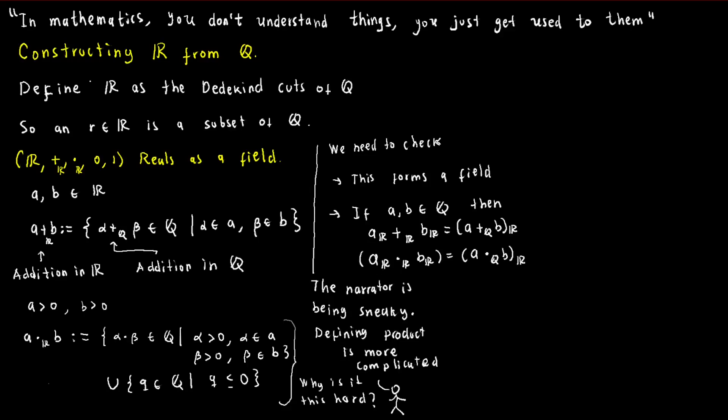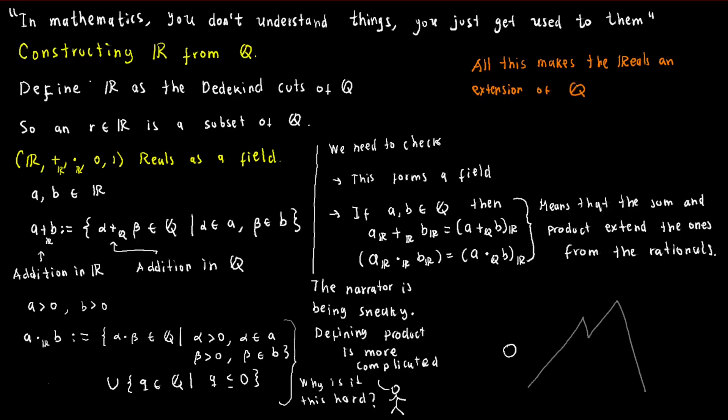It's also essential to notice that the operations of addition and multiplication must extend those of the rational numbers. That is, if x and y are rational numbers, then the sum and product of x and y in the real numbers must coincide with the sum and product of x and y in the rational numbers. This is important because we want the real numbers to be a natural extension of the rational numbers.